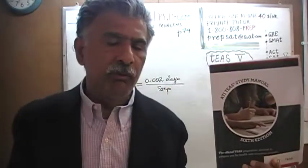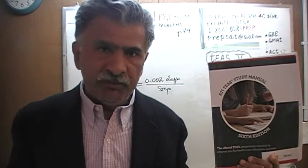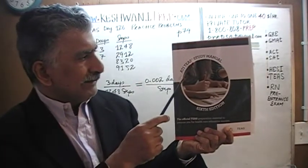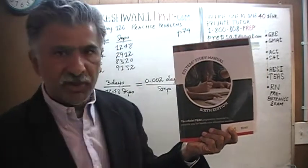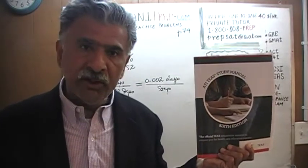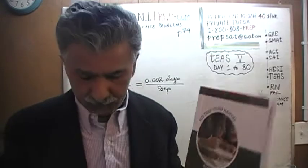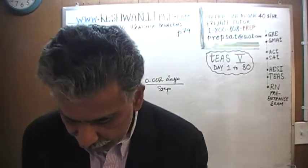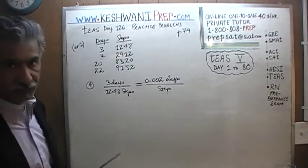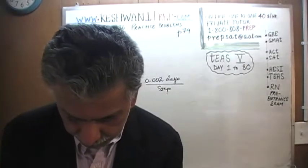We are here because we want to prepare for the TEAS. We have been solving math problems out of this book — the ATI TEAS study manual, the 6th edition. If you do not own this book already, purchase one immediately. You are going to need it. Today is our lesson number 126 and we are on page number 79. Please turn to it, page 79.